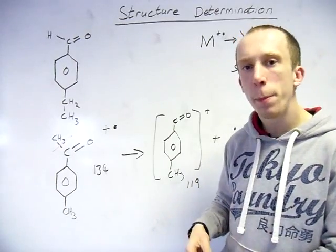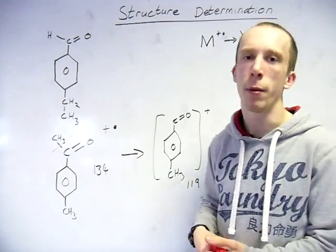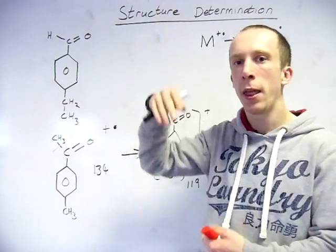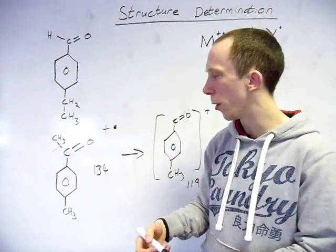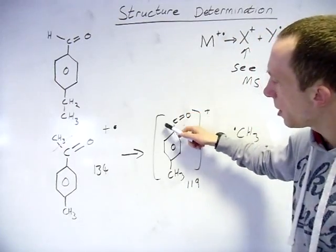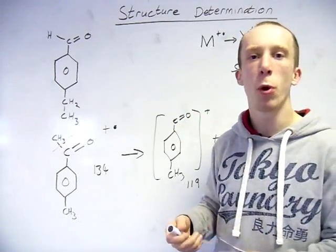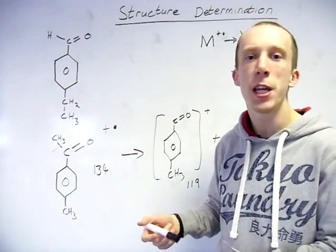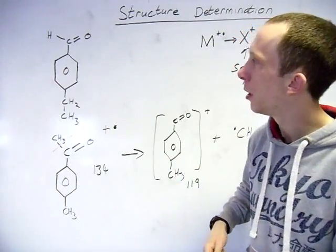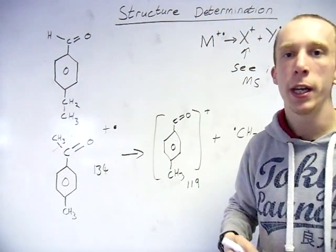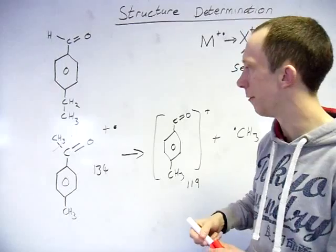In terms of how big the peaks are on a mass spectrum, it represents their abundance. So the taller the peak, then the more stable it is, the more it occurs. Now this ion here, the acylium ion, is very stable. It's one of the most common stable ions which you will be dealing with. So if I can snap off things to actually give me this ion, it bodes well. You're going to get a lot of it.